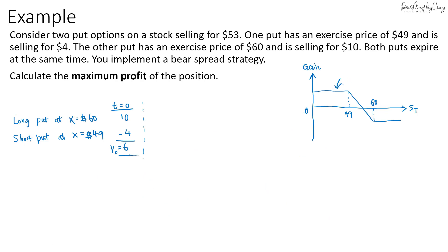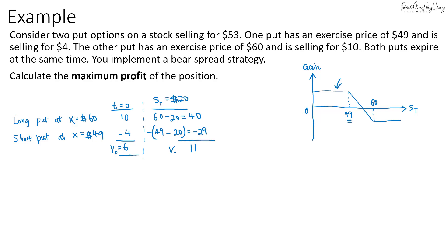For the bear spread strategy, profit is maximum when the spot price is below the lower strike price of $49. For example, taking a price of $20: the long put payoff is 60 minus 20, which is $40. The short put payoff is 49 minus 20 equals $29, but since we are short that's negative $29. The net value still comes to $11. So the maximum gain is $11 minus $6, which is $5.